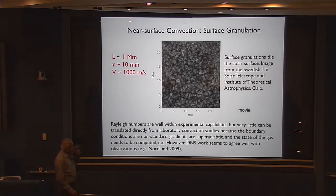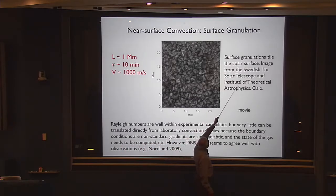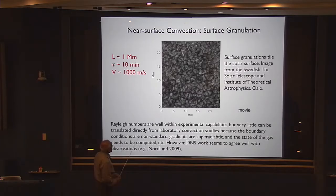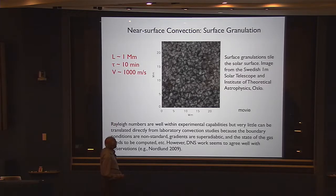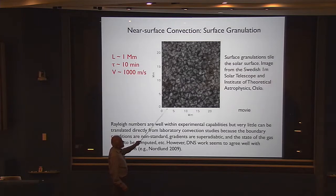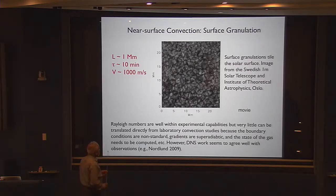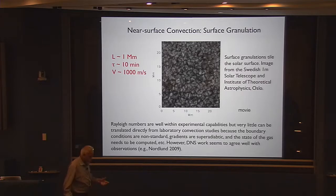There's a picture taken from the Swedish solar telescope. This kind of pattern is what you see. A typical size of this pattern could be of the order of one megameter — a very large scale from human experience — and it lasts about 10 minutes, moving at a speed of the order of one kilometer per second. This occupies about one percent of the radius of the sun, which is still very large since the sun's radius is about 700,000 kilometers.